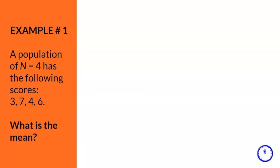Now, let's do two practice problems. Example number one is a population of N equals 4 that has the following scores: 3, 7, 4, and 6. What is the mean?